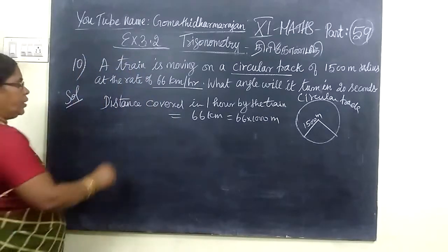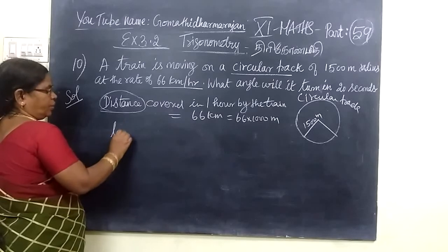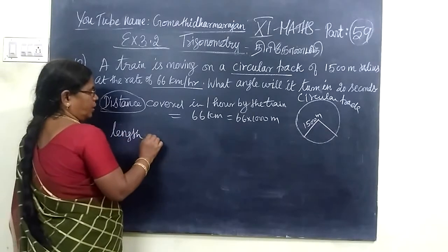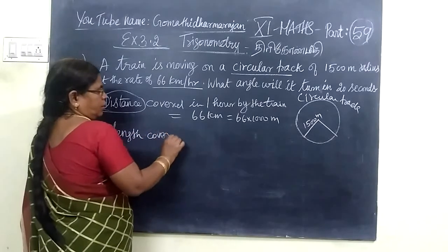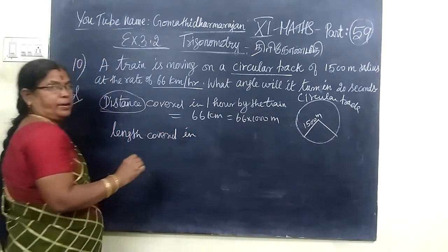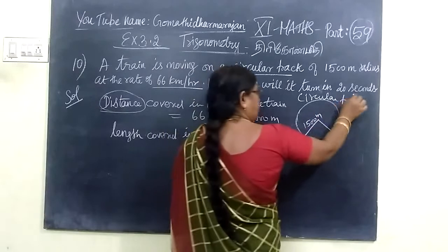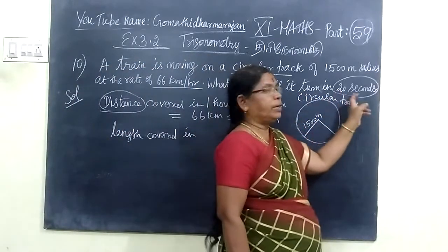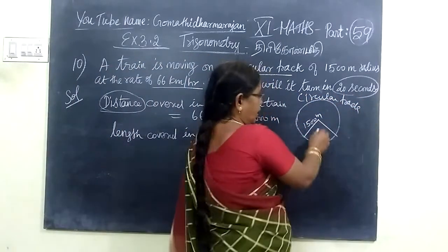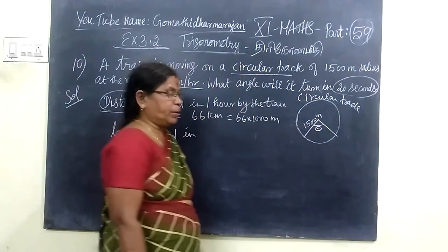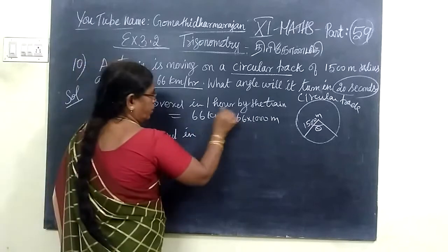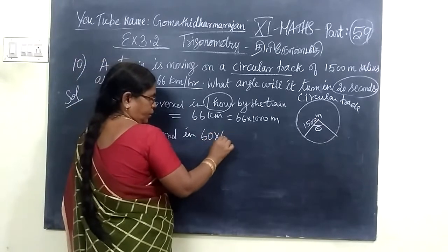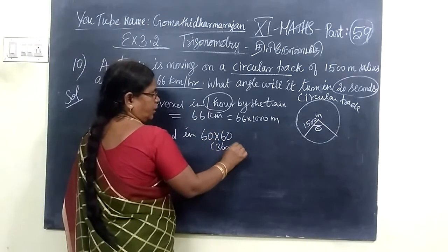And we are given distance here. In this time, the length the train covers. We keep it as length. So, this hour means 1 hour is equal to 60 into 60, that means 3600 seconds. So the distance covered equals 60 into 1000 meters in the interval.